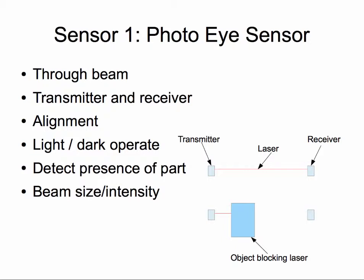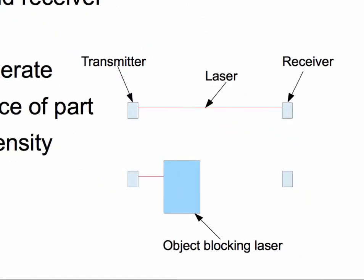Vibrations can easily cause faults or detect parts when they should not. The photo-eye sensors can be either light operate or dark operate. When it is set to light operate, it sends an OK output when the receiver receives light from the transmitter. On the other hand, dark operate makes it send an OK output when it does not receive light from the transmitter. It is widely used to detect the presence of parts. A rough example is shown here.